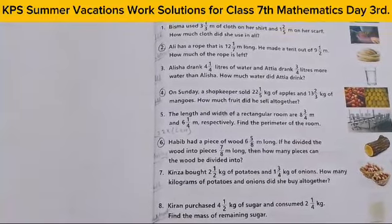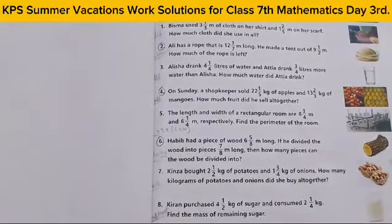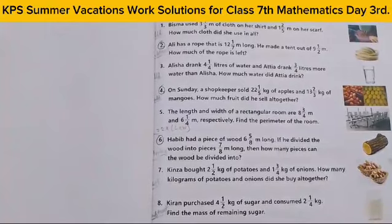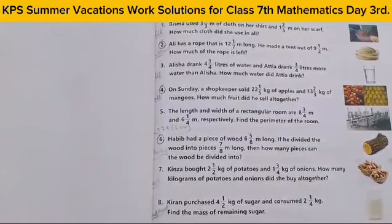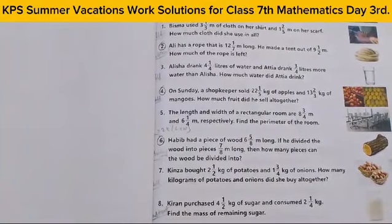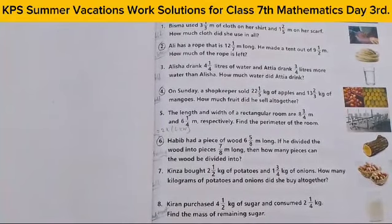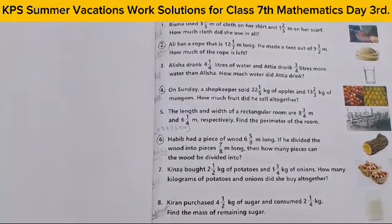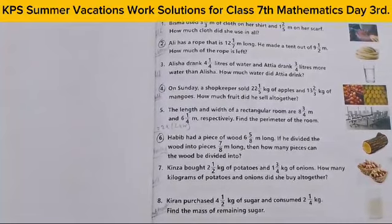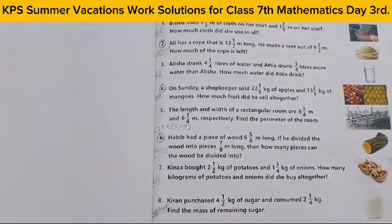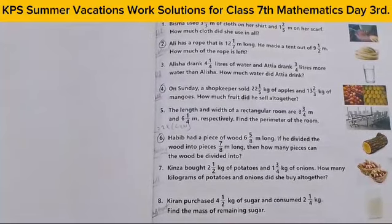اس نے کتنا بیچا۔ Next question آپ کے پاس question number 6: Habib had a piece of wood 6 and 5/8 meter long. If they divided the wood into pieces 7/8 meter long, then how many pieces can the wood be divided into?